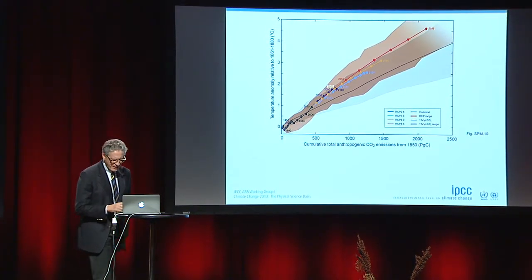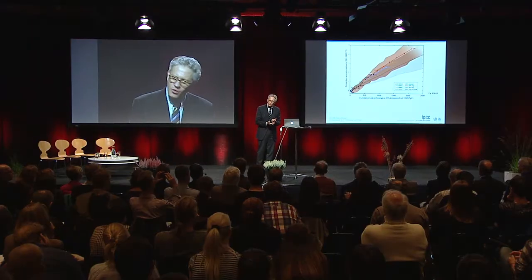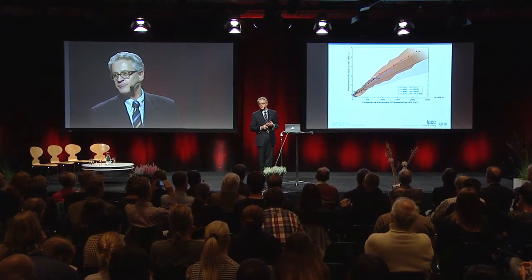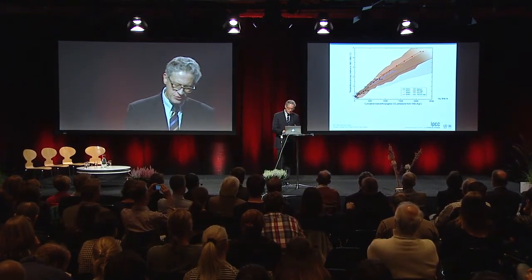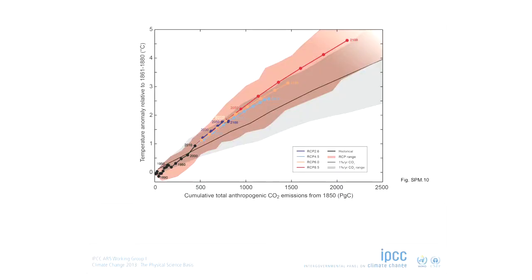So what do we do? We plot on the horizontal axis all the carbon emissions that have been blown out into the air since industrialization — every tree that has been cut, every brick of coal that has been burned, every litre of petroleum that has been used. That is summed up, and that is the so-called cumulative total anthropogenic carbon dioxide emission from 1850.